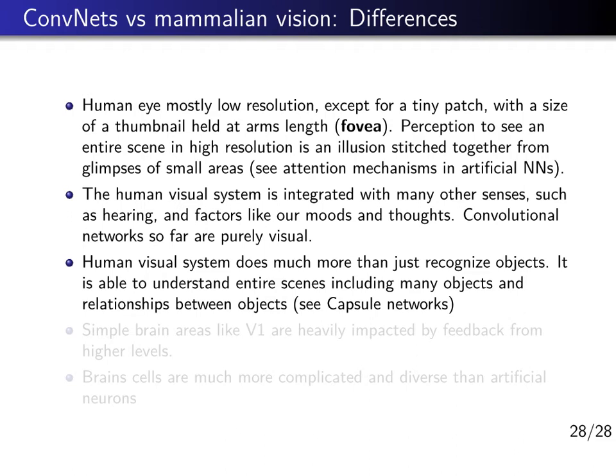There is an interesting idea called capsule networks that makes the spatial location and the transformation between different spatial locations more explicit — have a look at that. Also, although the first parts of the visual cortex are quite feed-forward, they are not only feed-forward. All areas, including V1, are heavily impacted by feedback from higher levels.